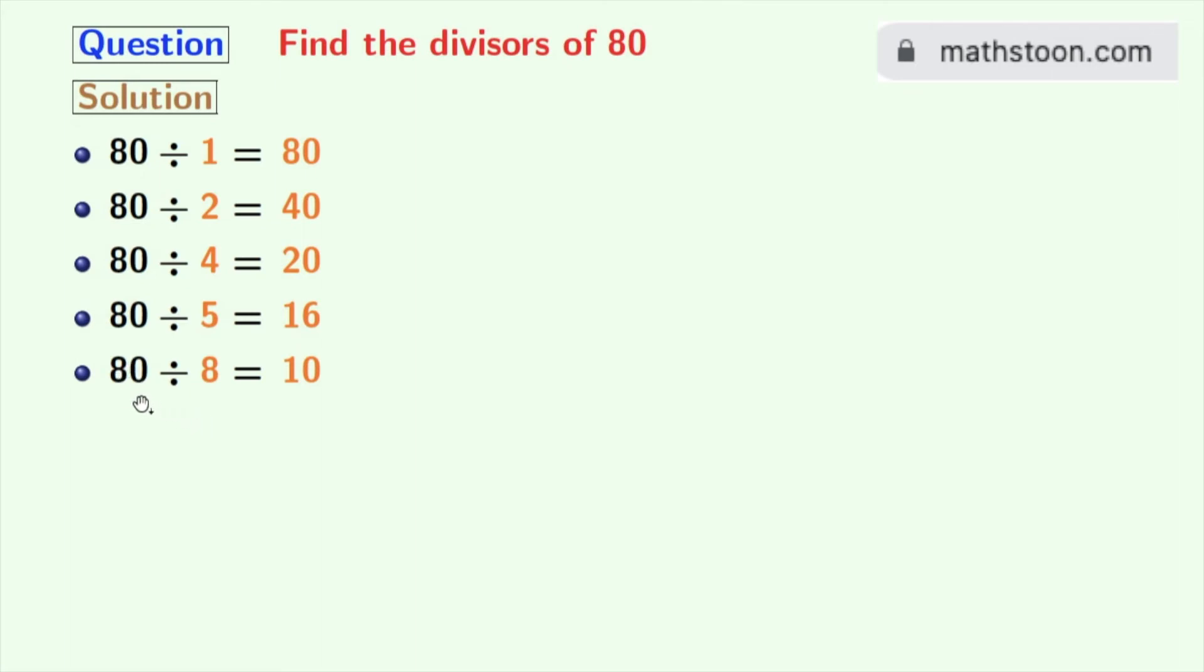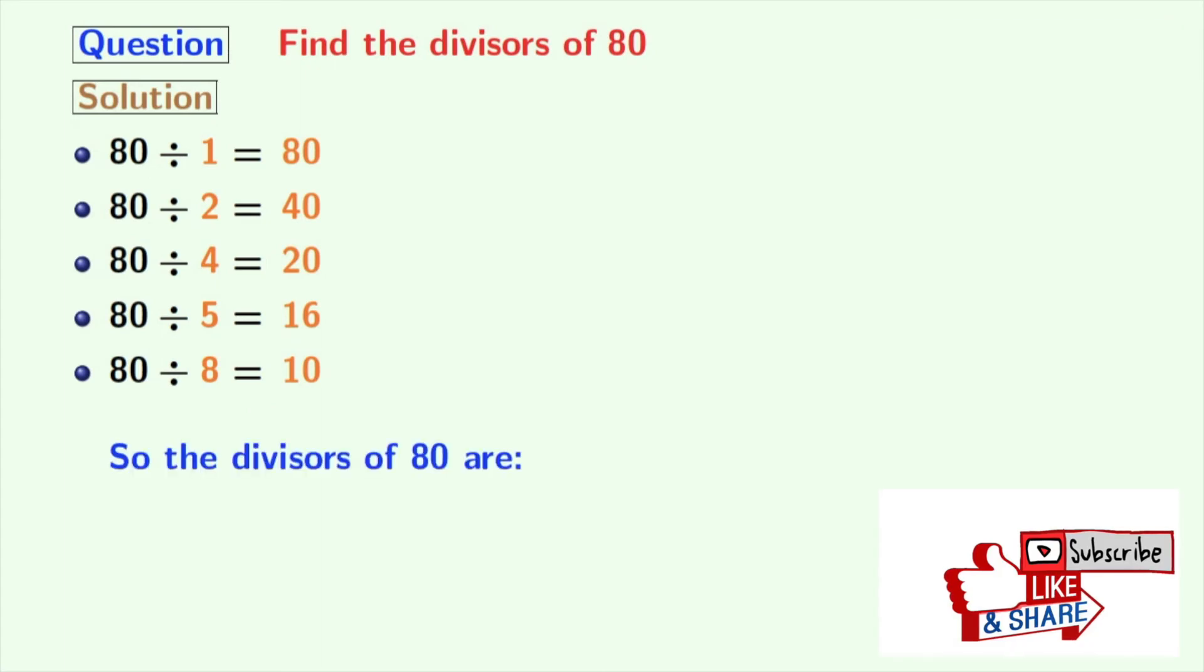Next, number 9 does not divide 80. And the next is 10 which is already here. So, we will stop right now. Now look that we have all the divisors of 80 which are in orange colors.